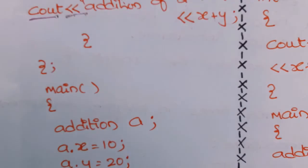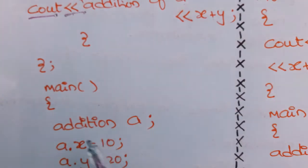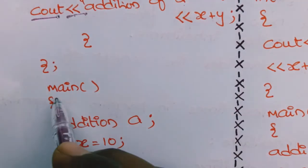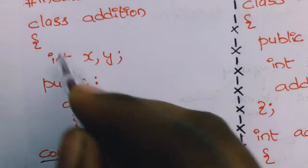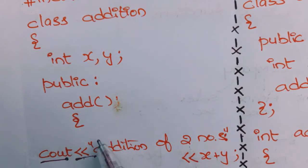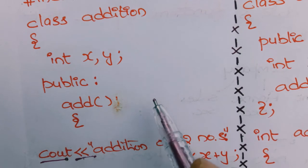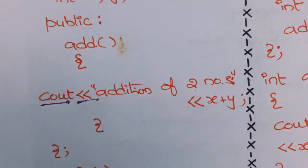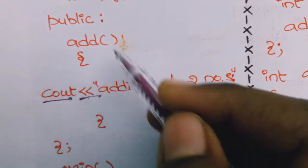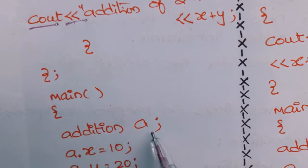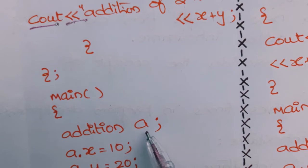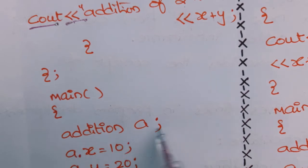Next is the main function — every program has a main function. Open the curly brace. For the class, I need to create an object. A class does not allocate any memory until you create an object. To create an object, the syntax is: class name, space, object name, semicolon. Here the class name is 'addition' and I have given the object name 'a'.